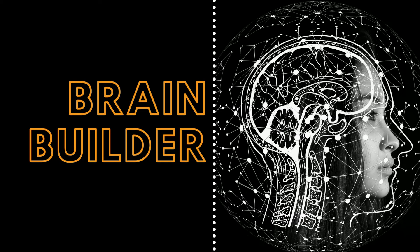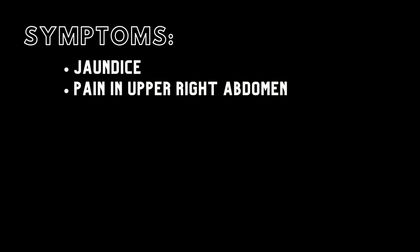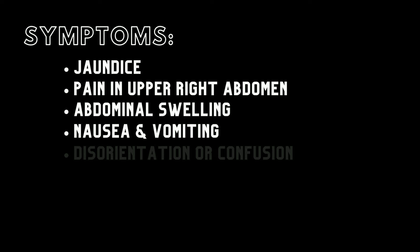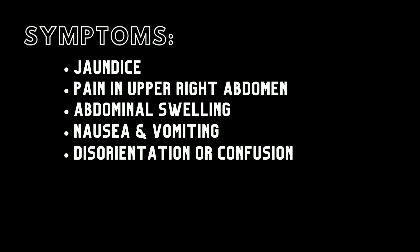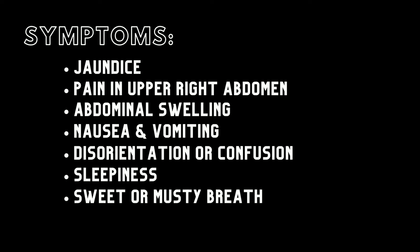Next, we will look at symptoms, causes, and treatments for liver failure, and finally give a patient example. Symptoms that a liver is failing include jaundice, which is the yellowing of the skin and eyes, pain in the upper right abdomen, abdominal swelling, nausea and vomiting, disorientation or confusion, sleepiness, a sweet or musty smell of the breath, and finally, tremors.